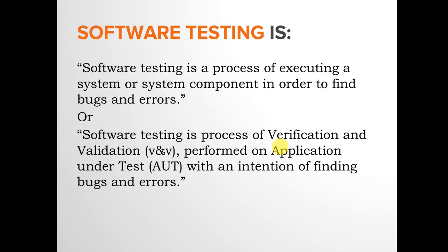Software testing is an intentional process of executing an application with the intention of finding bugs and errors. You can also define it as a process of verification and validation performed on an application under test, which is called AUT, with the intention of finding bugs and errors.